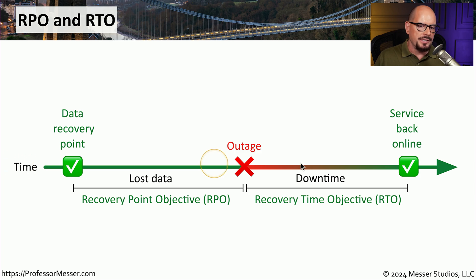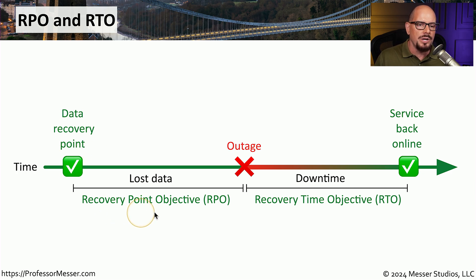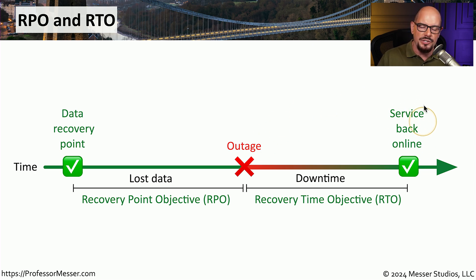If we look at both of these values on a timeline, as time goes by we have a certain data recovery point — maybe this is where data is backed up or replicated to a different site. Sometime after that point we would have an outage, and the time between that outage and back to the data recovery point is the recovery point objective, or RPO. Then we focus on resolving the outage — fixing servers, deploying new servers, moving the data center to a backup site. Finally, when services are back online, we measure the time between the outage and the online time frame as the recovery time objective, or RTO.